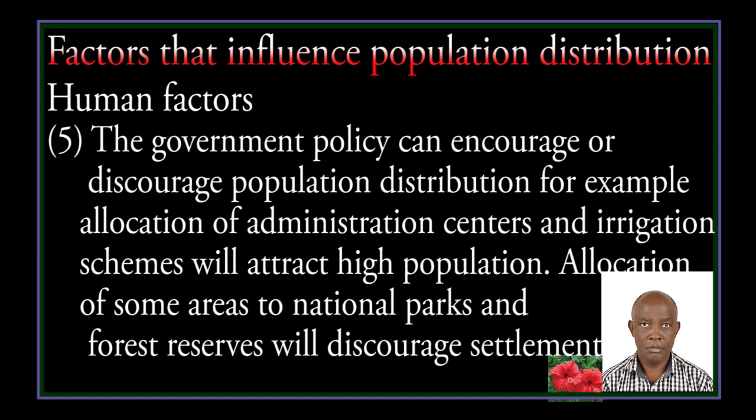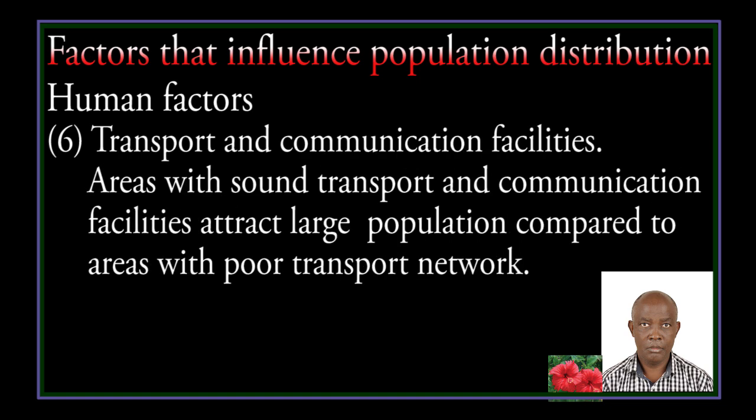Government policy can also encourage or discourage population distribution — for example, allocation of administration centers and irrigation schemes will attract high population, while allocation of some areas to national parks and forest reserves will discourage settlement. Areas with sound transport and communication facilities attract large population compared to areas with poor transport networks.